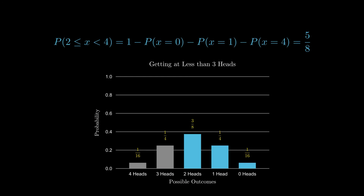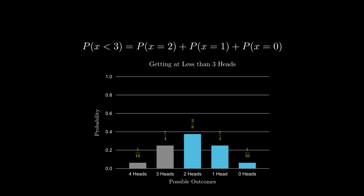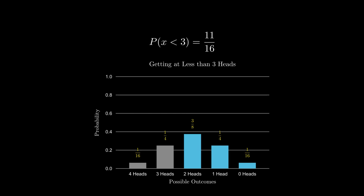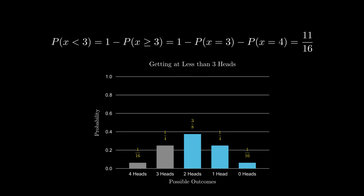That equals five-eighths, which matches our earlier calculation. Another example is getting less than three heads, again represented by the blue bars. Adding their values gives the probability for this range. The complement for this is getting three or more heads, or mathematically: one minus the probability of getting three heads minus the probability of getting exactly four heads, which equals 11 over 16.